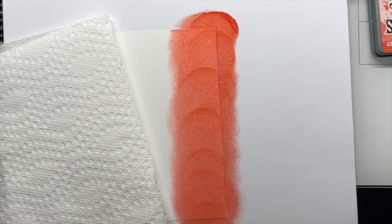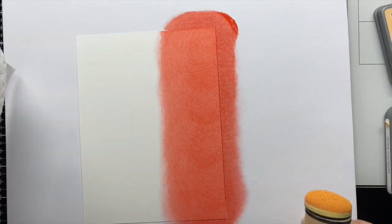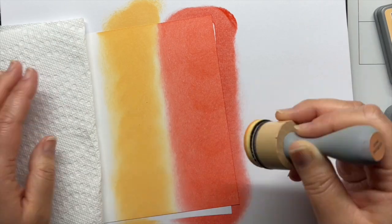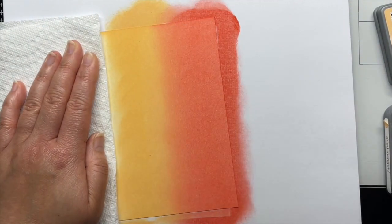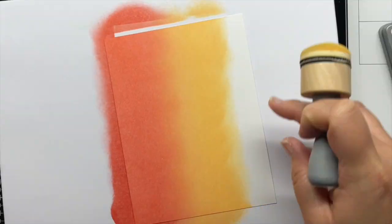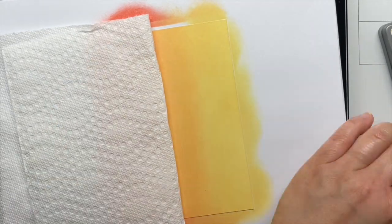Next I blend abandoned coral, dried marigold, and scattered straw distress oxide ink onto another panel of Strathmore Bristol Smooth cardstock to create my sunny sky. I splattered that panel with water and then set it aside to dry as well.